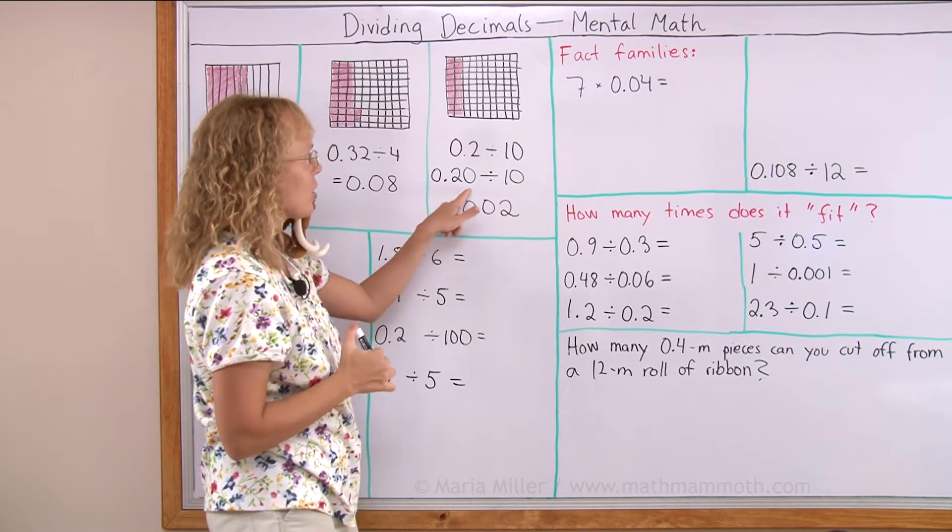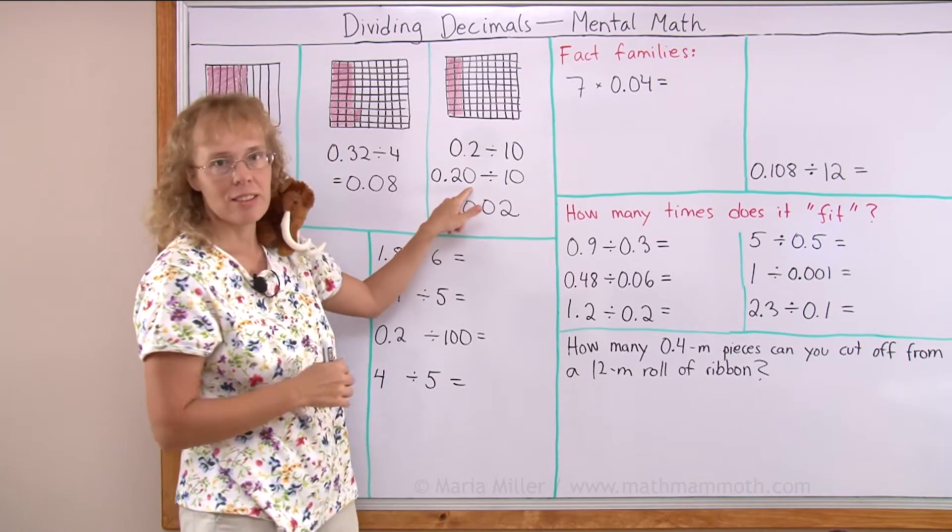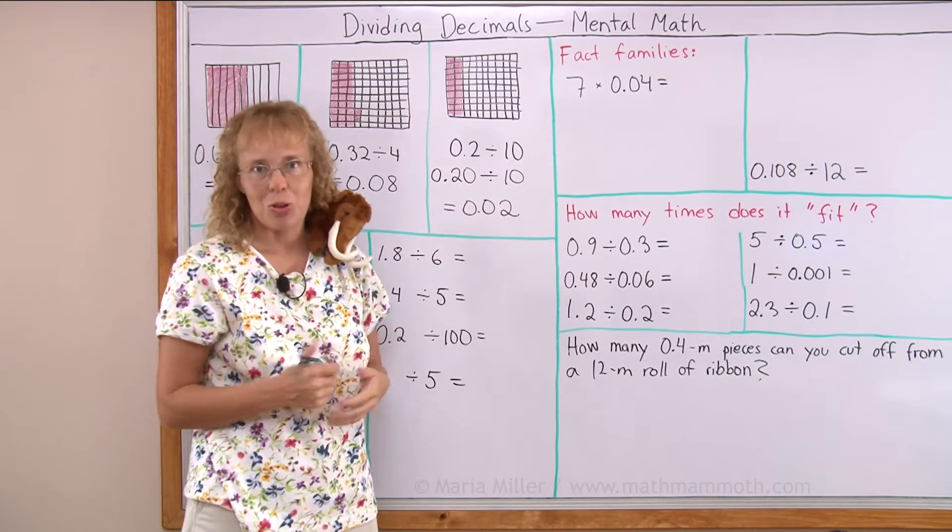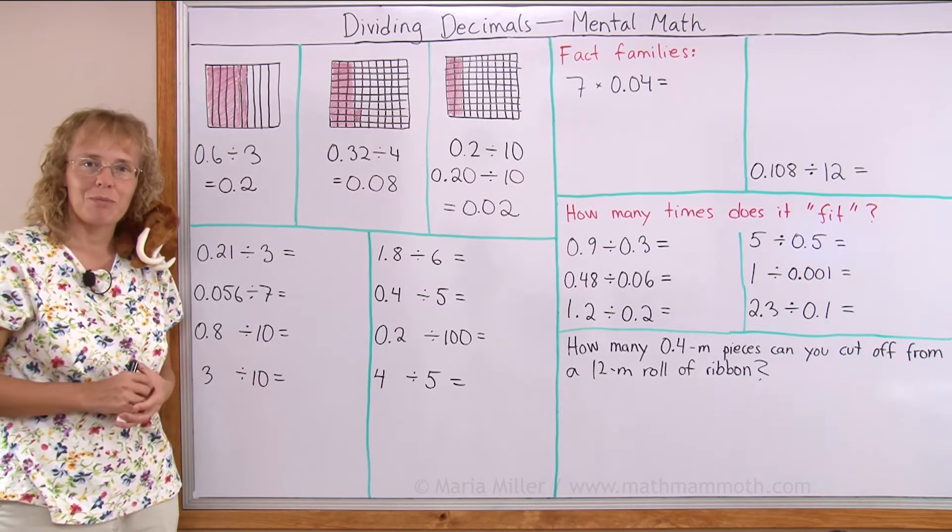So that's like a little trick that we can use sometimes. Basically I tacked on an extra decimal zero into the number and then my division was even, so to speak. Here, can you solve these on your own? Try some. Pause the video.